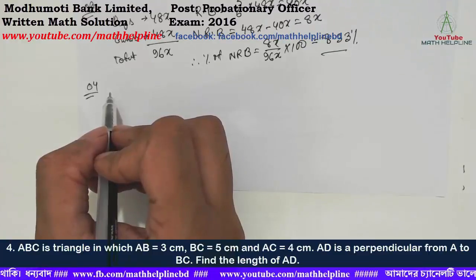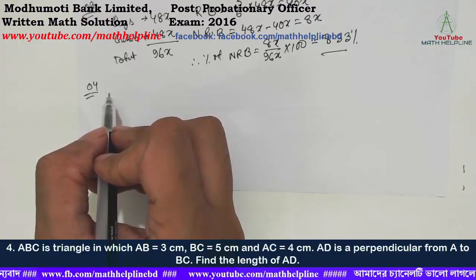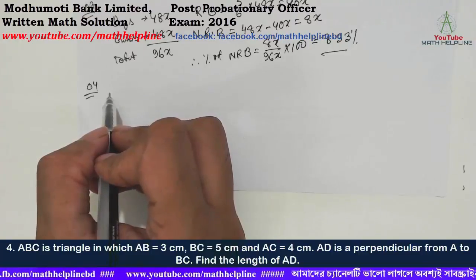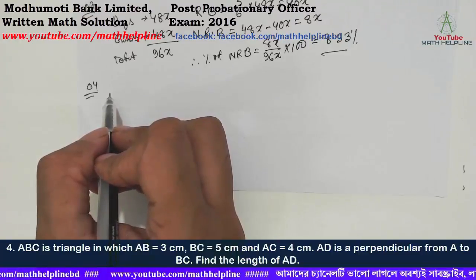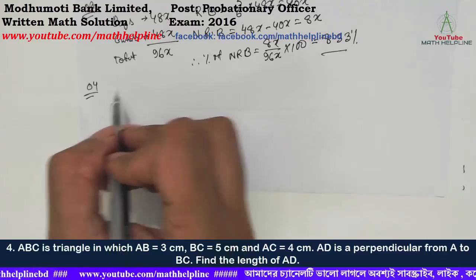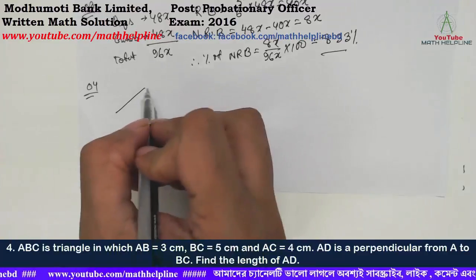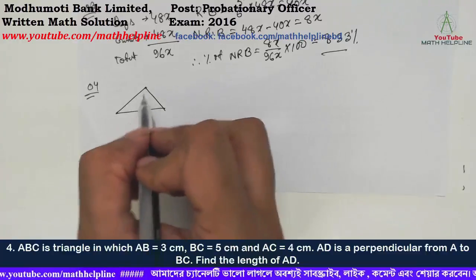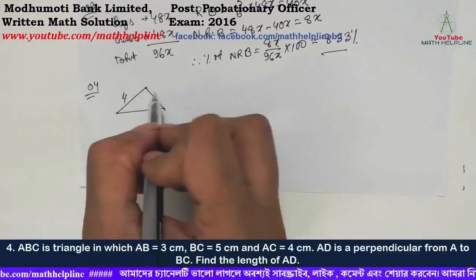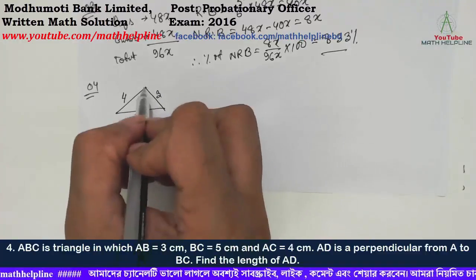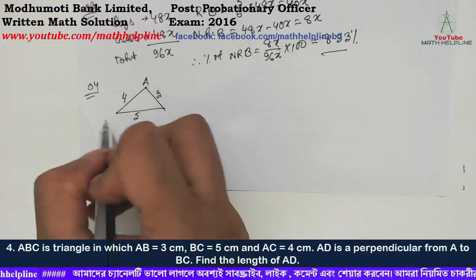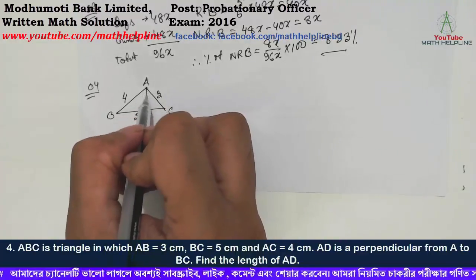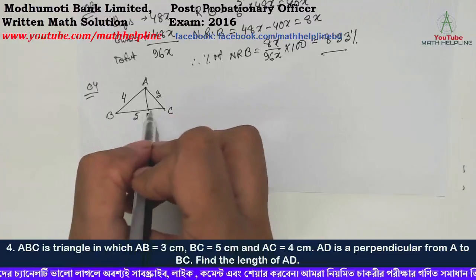Next problem: in triangle ABC where AB equals 3 cm, BC equals 5 cm, AC equals 4 cm, and AD is perpendicular from A to BC. Find the length of AD. So if we look at BC = 5, with points A, B, C and the perpendicular D on BC.